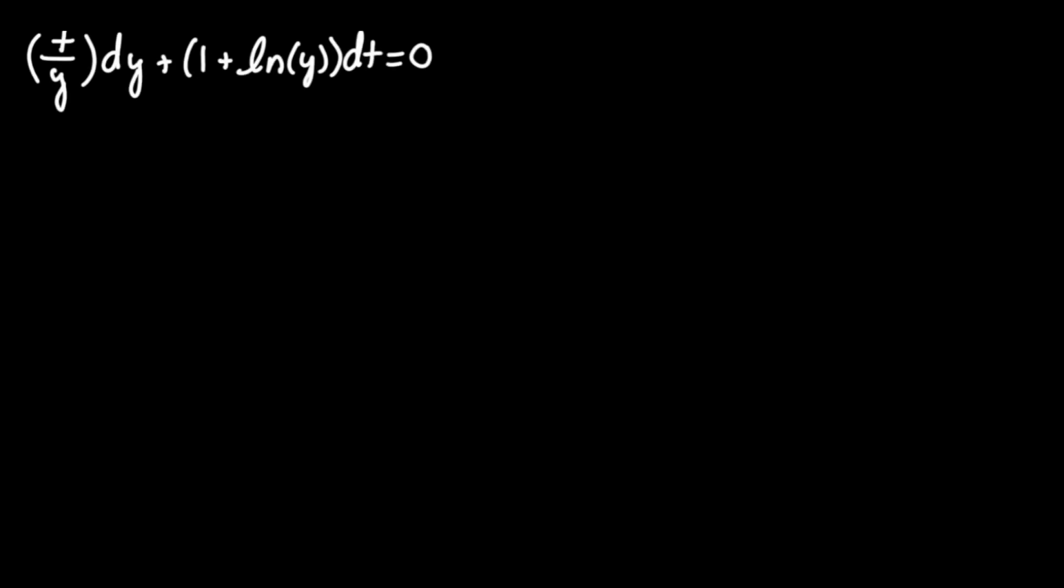Determine whether the equation is exact. If it is then solve it. So we have t over y dy plus 1 plus ln y dt equals zero.